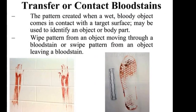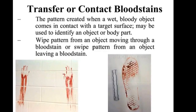The last type is contact or transfer — when a bloody object comes in contact with a non-bloody surface. A swipe pattern is a bloody hand touching a non-bloody surface. A wipe is like wiping your nose with a tissue — you're coming to the source of the blood. Swipes and wipes belong in the same transfer contact category, but they are two different things. All right, that's it for today, with more coming your way soon.